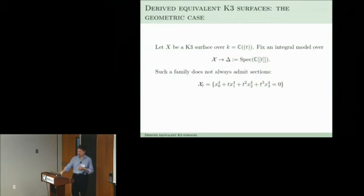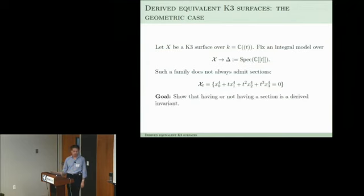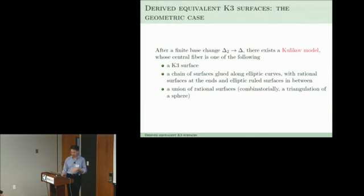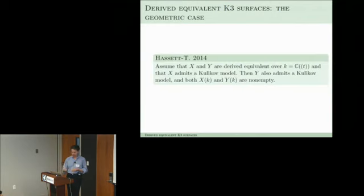Potentially good reduction is a derived invariant — there are results in this direction — and for bad reductions there is some recent work showing this part of the picture is consistent. We can also look at the geometric case over a punctured disc: not every family of K3s over a punctured disc has a section. The goal is to show that having a section or not is a derived invariant. There is a theory of Kulikov models — you can get a central fiber of special form — and what we show is that if you're derived equivalent over C((t)) and one has a Kulikov model, the other does too.